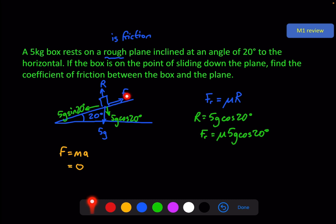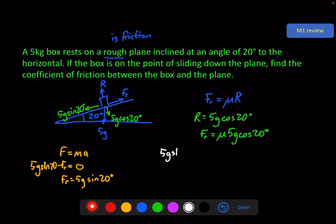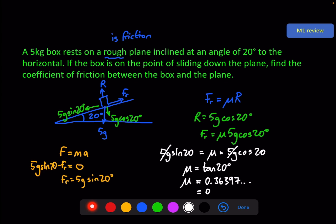The F here is the overall resultant force, which is 5g sine 20 minus the friction. Therefore the friction must equal 5g sine 20 — they are balanced because this is not moving; it's in equilibrium. Since friction equals both expressions, we can write: 5g sine 20 = mu times 5g cosine 20. The 5g's cancel out; dividing by cosine 20 gives mu = tan 20° = 0.364 to three significant figures.